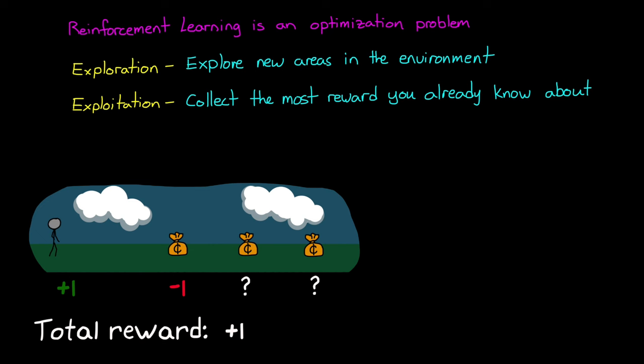However, if we occasionally let the agent explore the state space, even at the risk of collecting fewer rewards, it can fill out more of its value function, and it opens up the possibility of finding higher rewards that it didn't know about.